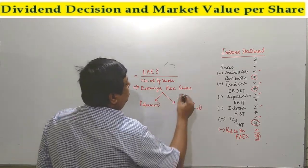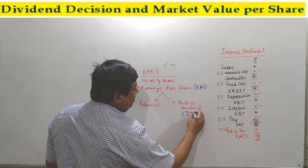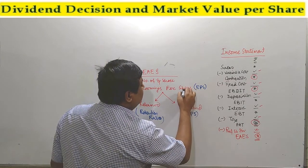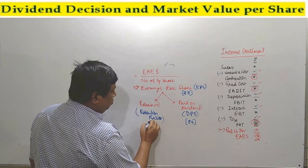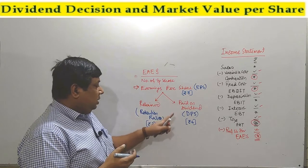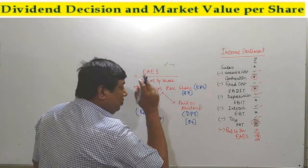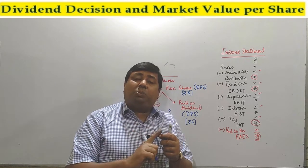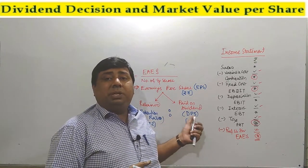Earnings Per Share is also known as EPS. The proportional amount which the company paid as a dividend to shareholders is known as Dividend Per Share, or DPS. For example, if a company earns Rs.8 per share and decides to pay equity shareholders Rs.6, then the remaining Rs.2 is known as retained earnings. So Rs.6 is paid as dividend and Rs.2 is retained. We have to make a trade-off between the retention ratio and the dividend payout ratio.